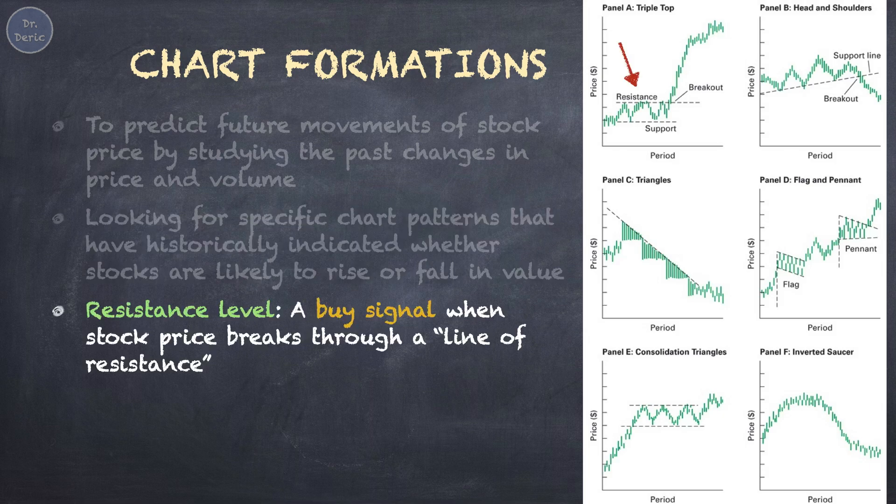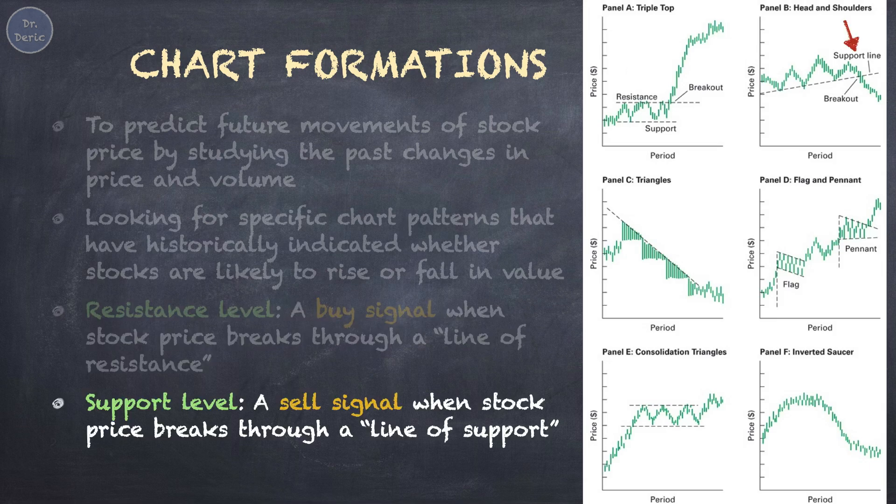Resistance level is a price level at which a stock has historically had difficulty moving beyond. When a stock price breaks through this resistance level, it can be seen as a buy signal by technical analysts. This breakout may suggest that there is strong upward momentum, potentially leading to further price increases. Support level is a price level at which a stock has historically found buying interest and tended to bounce back from declines. When a stock price breaks through this support level and falls below it, it can be viewed as a sell signal. This breakdown may indicate weakening support and potential further price declines.